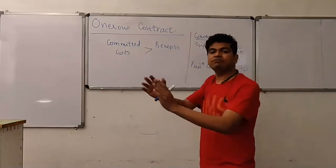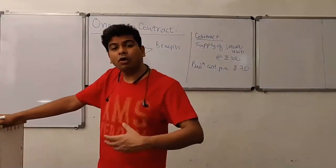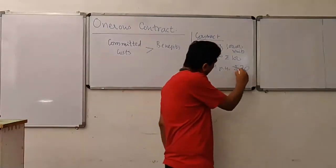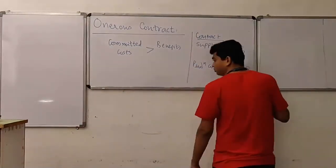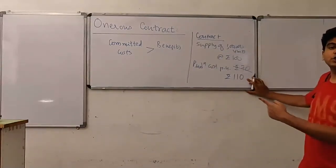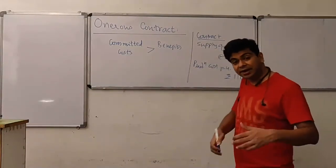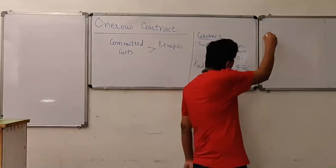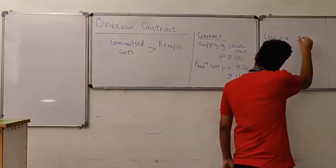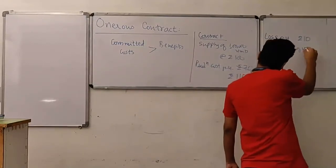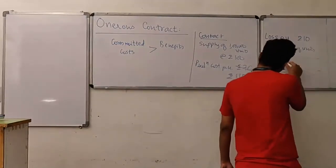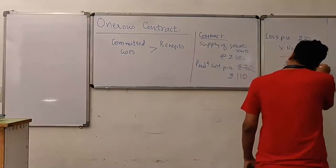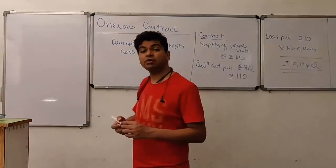However, once you start manufacturing, you realize that the cost of raw materials, labor, and everything has increased to such an extent that your production cost per unit has now increased to ₹110. So if you execute this contract, you will produce at ₹110 and supply at ₹100. This contract will result in a loss of ₹10 per unit, and ultimately you will suffer a loss of ₹10 lakhs. This contract has become an onerous contract.